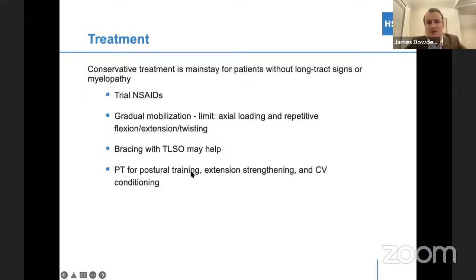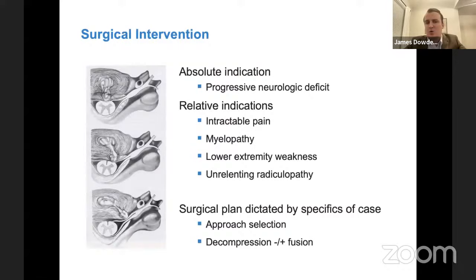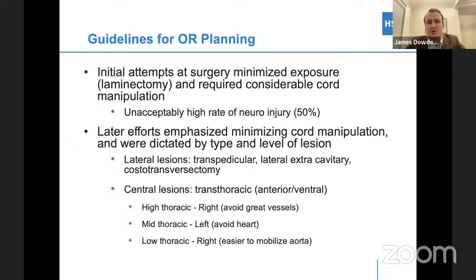The treatment — you always want to think about conservative treatment first. If they're not having any long tract signs or myelopathy, you want to try to get them through without surgery: anti-inflammatories, physical therapy, mobilization if you can. But if that doesn't work, the surgical indications are progressive neurologic deficit, intractable pain, myelopathy, and weakness. In that case, you're going to do surgery, and you're going to dictate the approach based on the type of disc herniation you're dealing with.